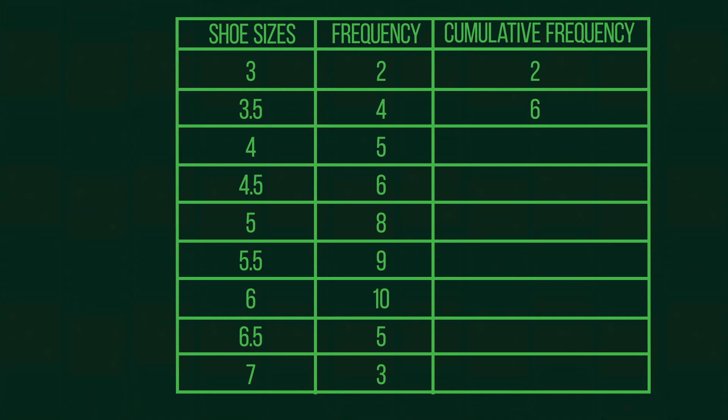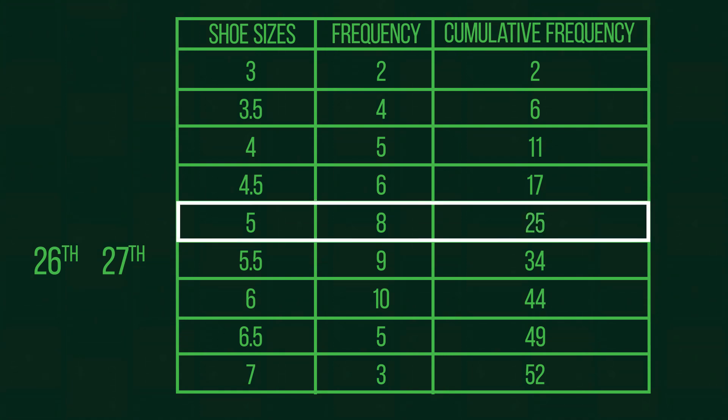So with the final cumulative values in place, we can find the 26.5 value. The 26th and 27th values are both in the 5.5 group, as we can see that the 25th value is the last value in size 5. The mean of the 26th, 5.5, and the 27th, 5.5, is also 5.5. So this is the median value for this data set.